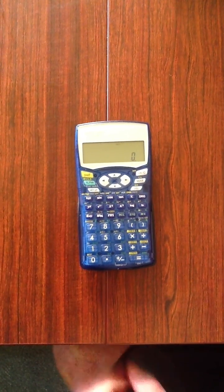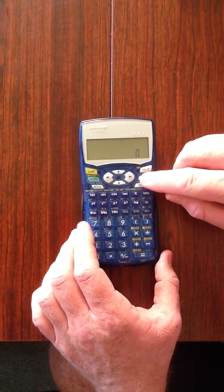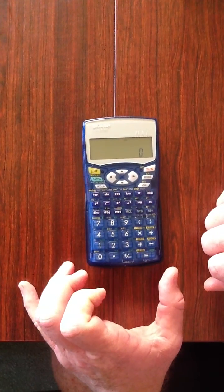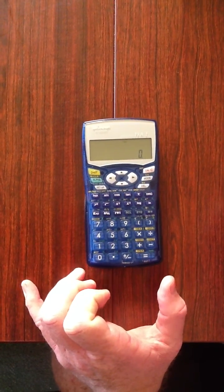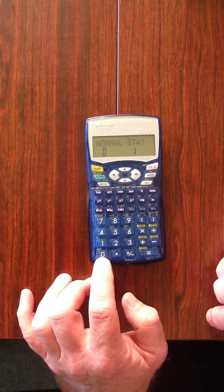Okay, to do that first of all we need to make sure our calculator is cleared. To clear the calculator you go mode, zero and it should be cleared of statistical data.